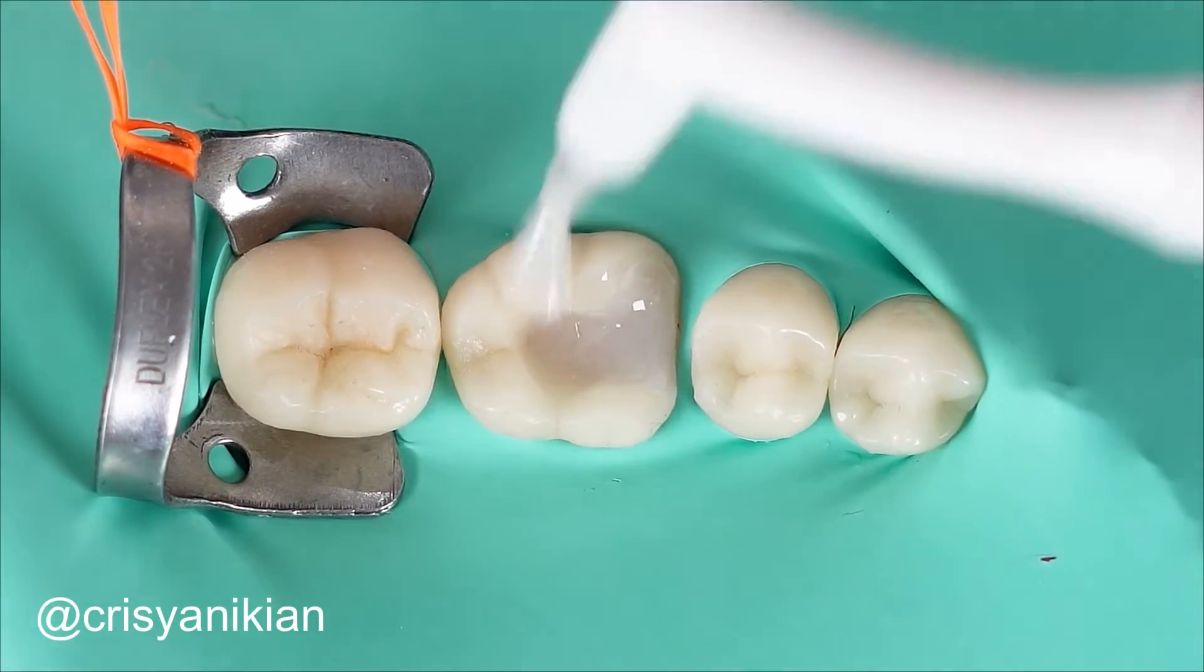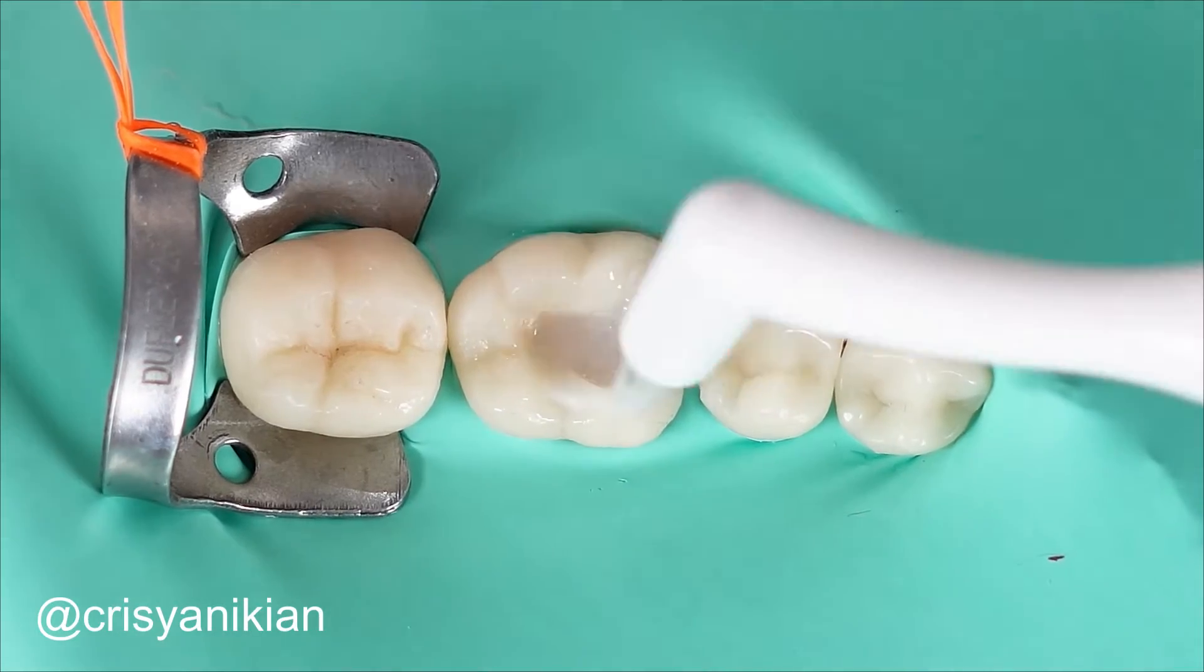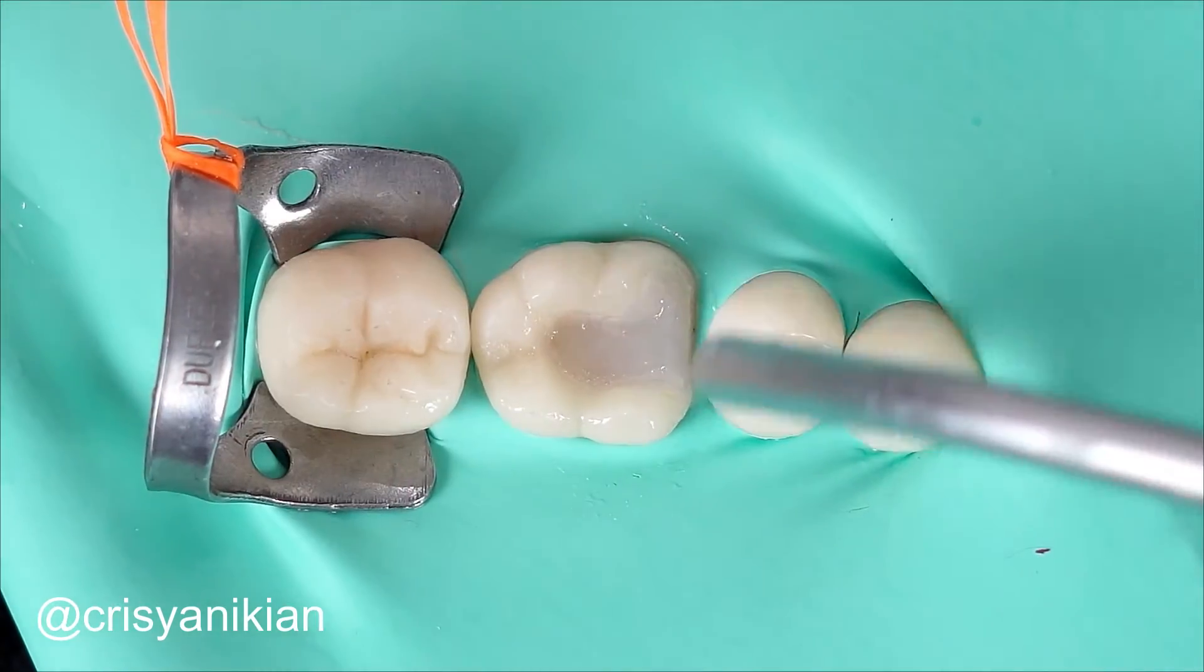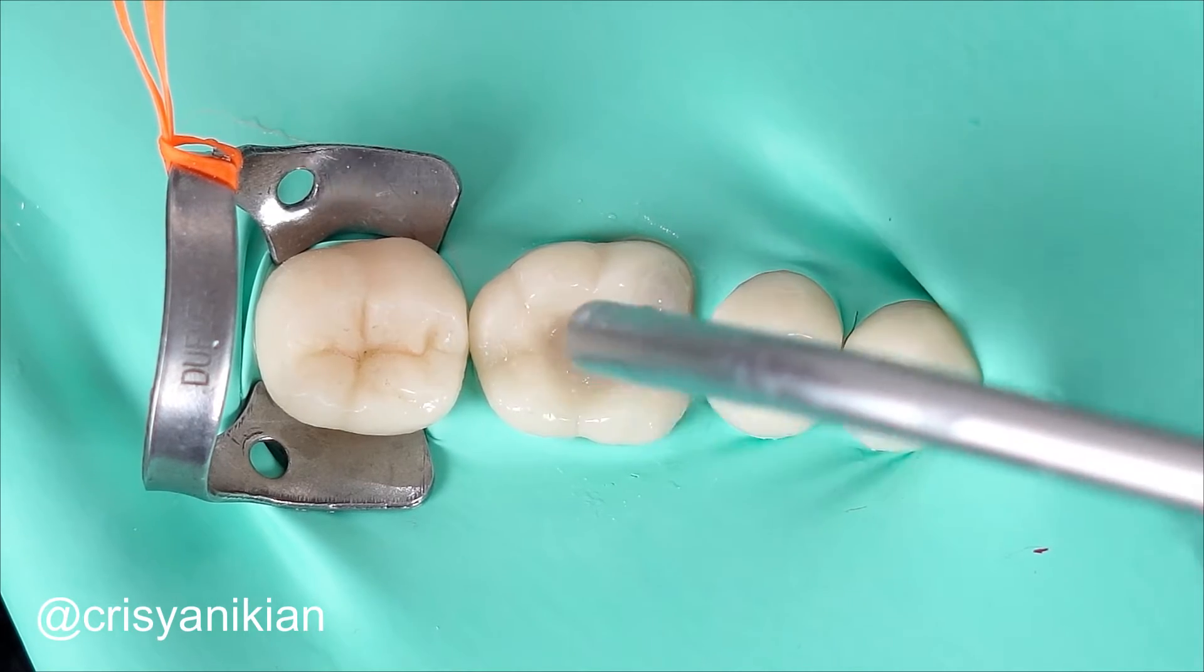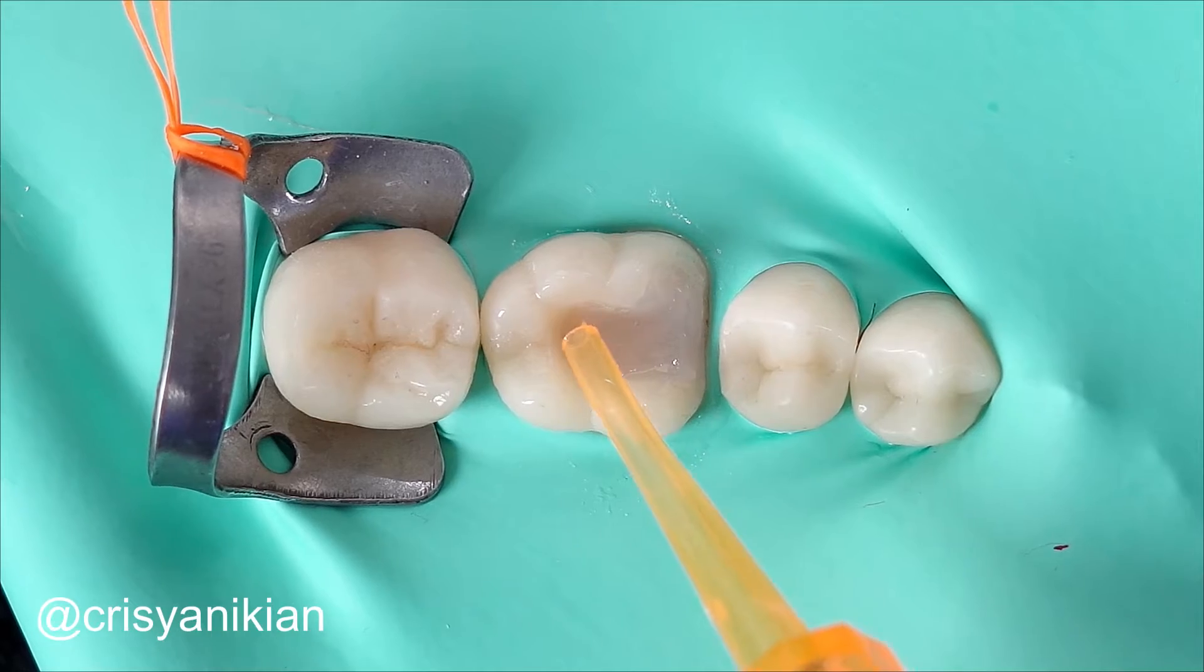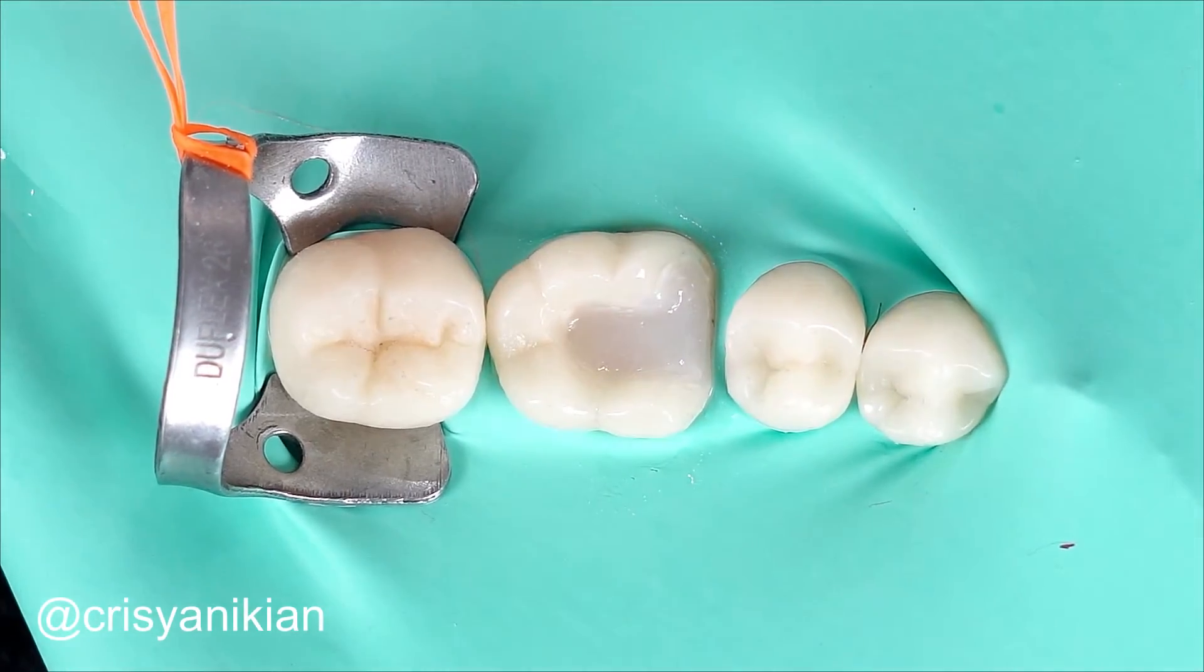Apply the adhesive system from the same brand as the cement you are using. Rub it thoroughly on the dental preparation for 20 seconds. Blow a light air stream for 20 seconds to evaporate the solvent. Use a disposable endodontic suction to remove excess adhesive. Do not cure the adhesive. Keep the light off the tooth.